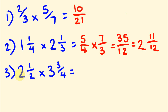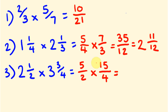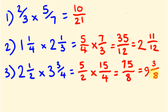For the last one, change the mixed numbers: two times two is four plus one is five over two. And three times four plus three: three times four is twelve plus three is fifteen over four. Multiply across: five times fifteen is seventy-five, and two times four is eight. Then seventy-five divided by eight — nine eights are seventy-two — so it equals nine with three left over, giving nine and three eighths.